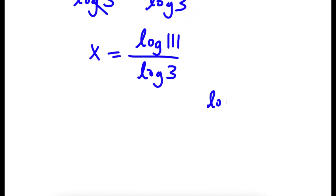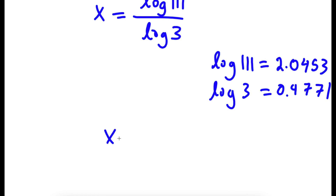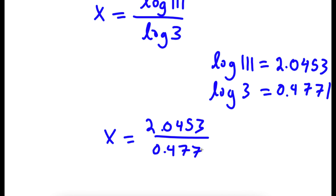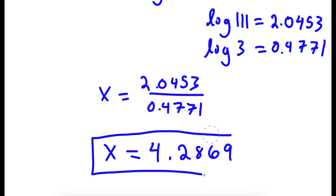Now log 111 is equal to 2.0453, and log 3 is equal to 0.4771. So I have x is equal to 2.0453 over 0.4771, which is equal to 4.2869. So this is my answer.